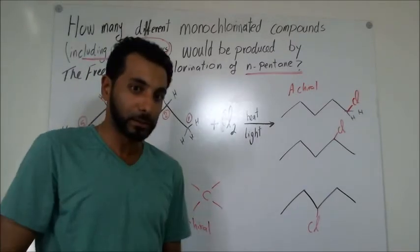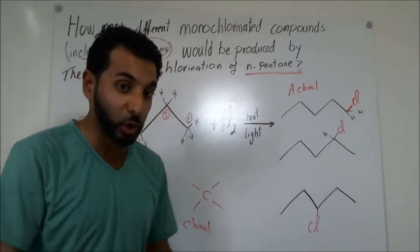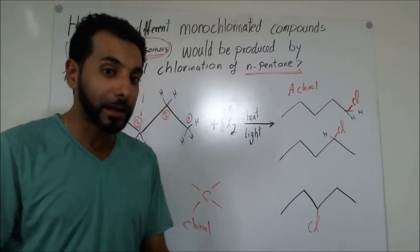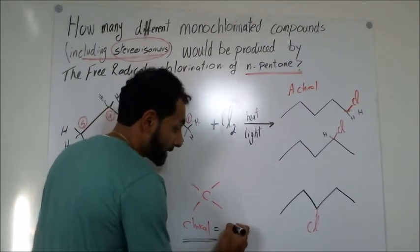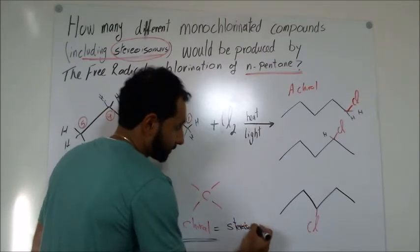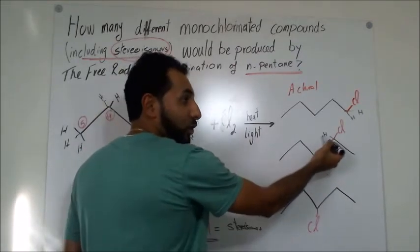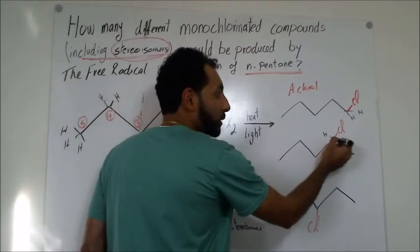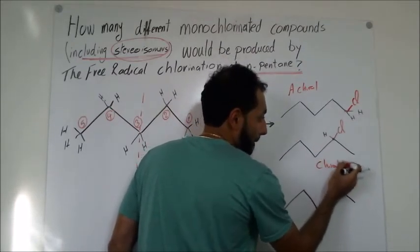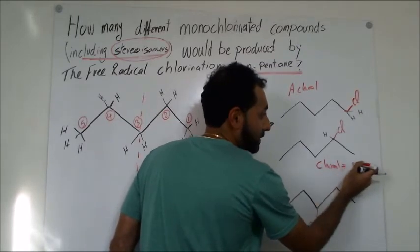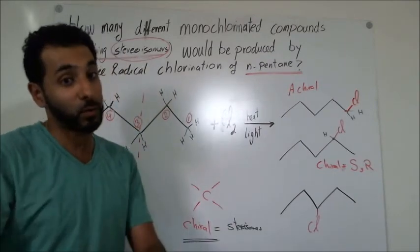For product 2, the carbon bearing the chlorine has four groups: methyl, propyl, hydrogen, and chlorine — four different groups. So this carbon is chiral, meaning it has stereoisomers: R and S configurations. That gives us two different compounds for product 2.